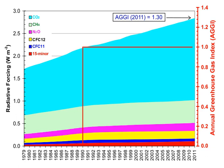Ice cores provide evidence for greenhouse gas concentration variations over the past 800,000 years. Both CO2 and CH4 vary between glacial and interglacial phases, and concentrations of these gases correlate strongly with temperature. Direct data does not exist for periods earlier than those represented in the ice core record — a record that indicates CO2 mole fractions stayed within a range of 180 ppm to 280 ppm throughout the last 800,000 years, until the increase of the last 250 years.